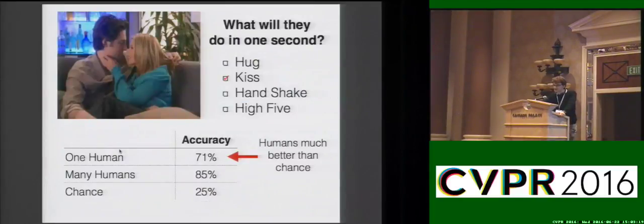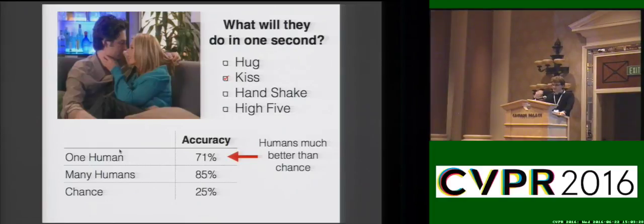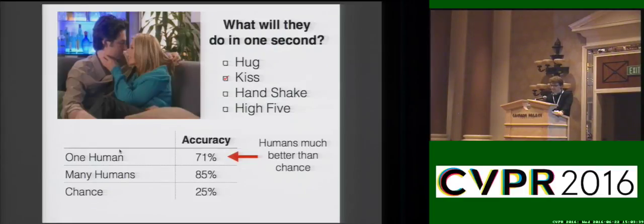Even though this is a hard task, what is really interesting is that humans have some basic intuition as to what's going to happen in the future. We took scenes much like these and showed them to a couple of people in our lab, asking them to anticipate which of the four actions they think is going to happen in one second. It turns out that humans are much better than chance — they're not perfect and don't solve the task, but they are better than chance.